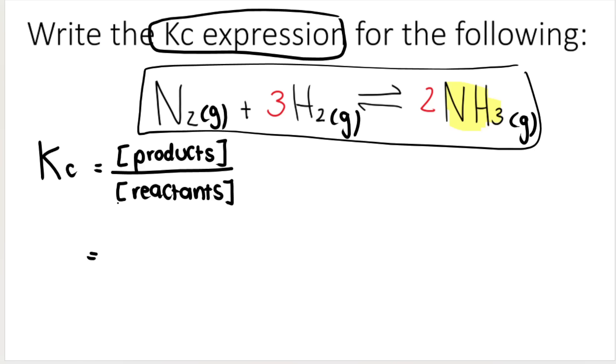So how do I do this Kc expression? Well, the top is concentration of products. So it's going to be the concentration of NH3. And you might be thinking, ma'am, why didn't you put the two over here?